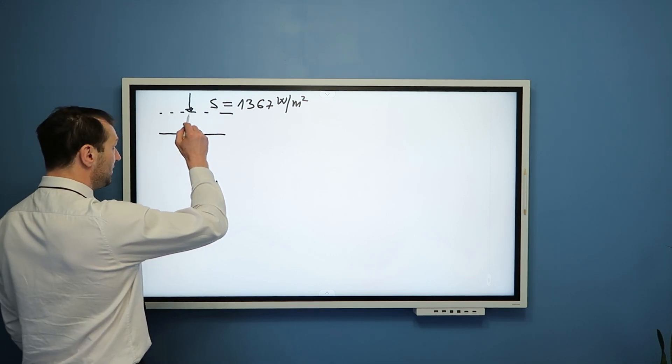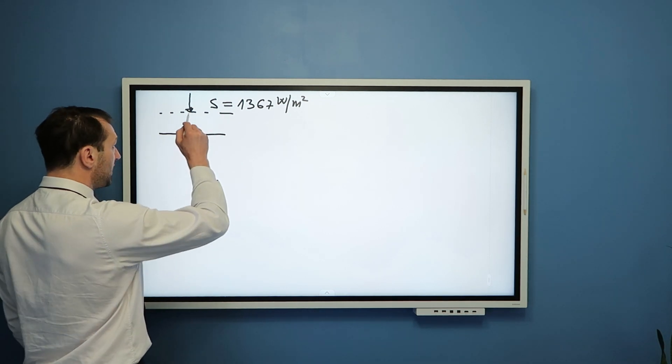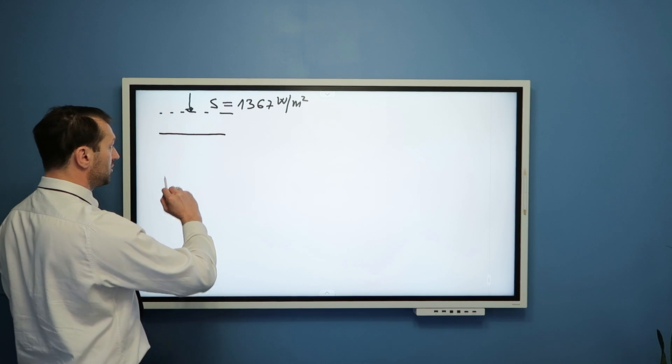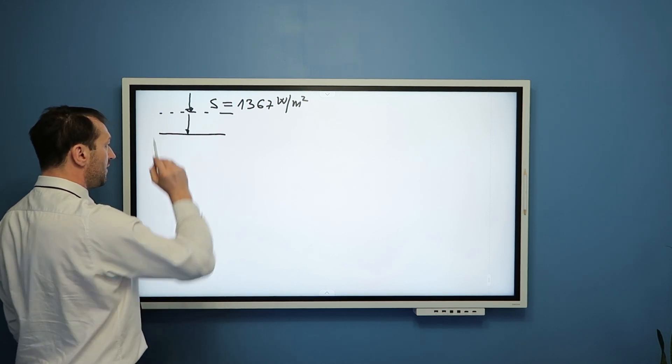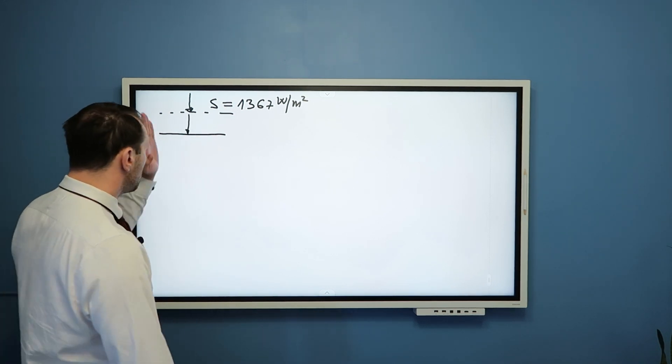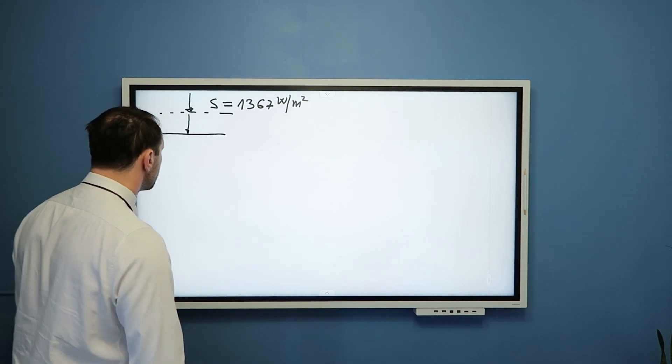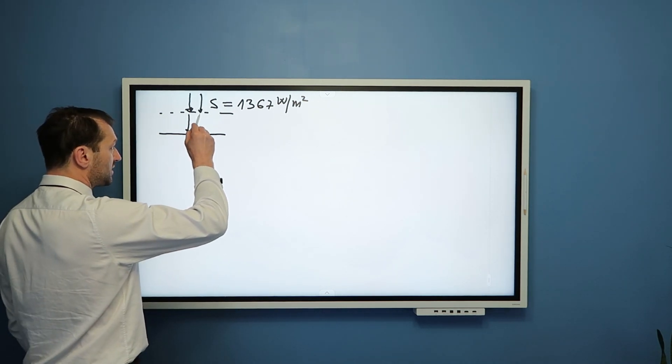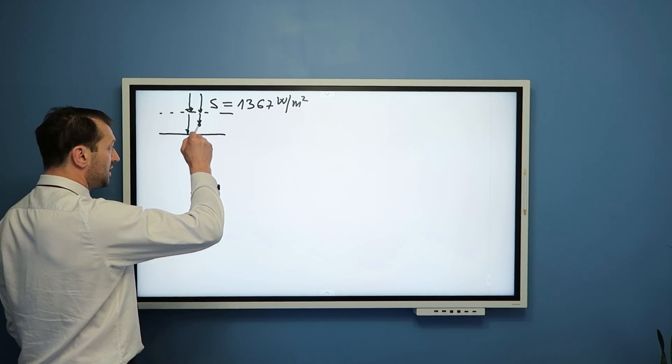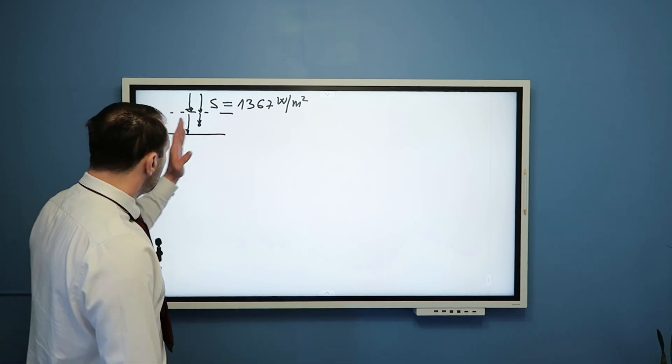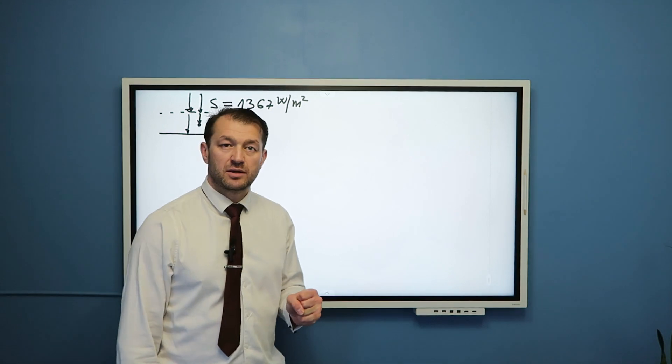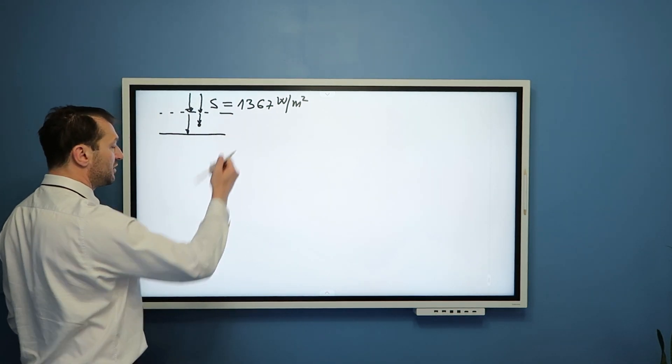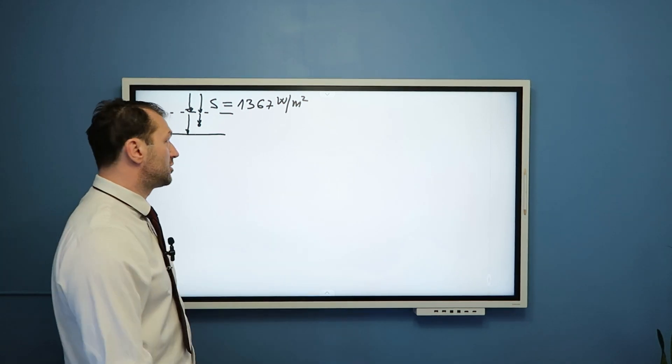Clearly, one destiny of this light ray can be to not interact with particles in the atmosphere and reach the surface of the Earth. We call that direct radiation. Another light ray might be absorbed here by a molecule or atom in the Earth's atmosphere. That would be absorption of light and consequently we would have increase of the temperature of the atmosphere.